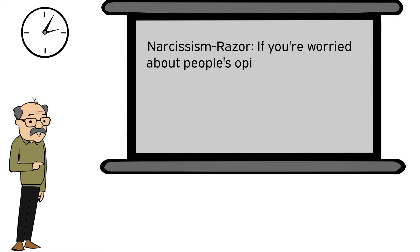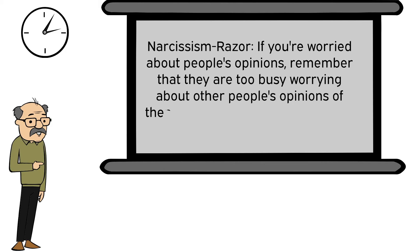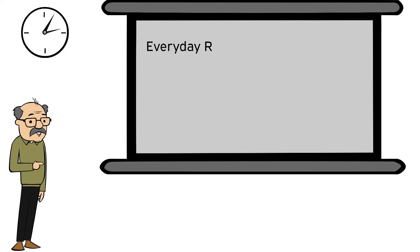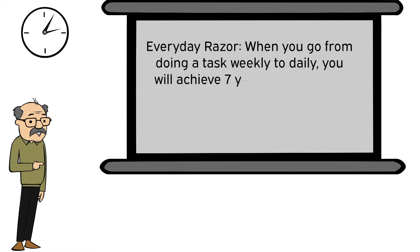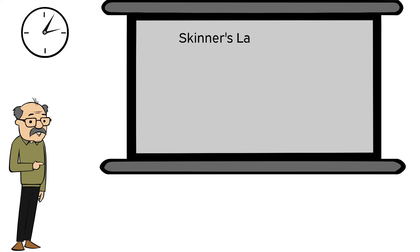Narcissism razor: if you're worried about people's opinions, remember that they are too busy worrying about other people's opinions of them 99% of the time. You're just an extra in someone else's movie. Everyday razor: when you go from doing a task weekly to daily, you will achieve seven years of output in one year. If you apply a one percent compound interest each time, you will achieve 54 years of output in just one year.